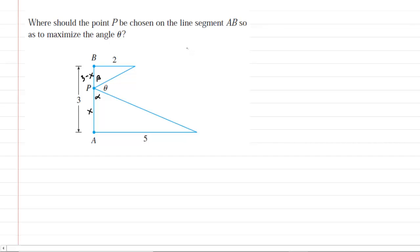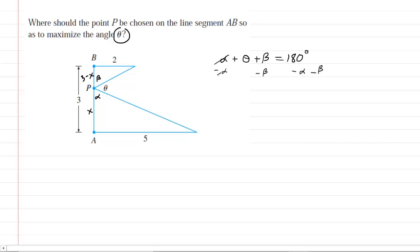After adding those details to our picture, the next thing we need to do is develop a few equations. We can start with the simplest: alpha, theta, and beta all form a straight-line segment — basically the segment APB. We know from geometry that a straight-line segment adds up to 180 degrees, so alpha plus theta plus beta equals 180 degrees. Since we're trying to maximize theta, it's useful to solve for theta: theta equals 180 minus alpha minus beta.